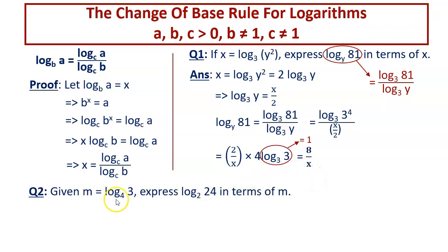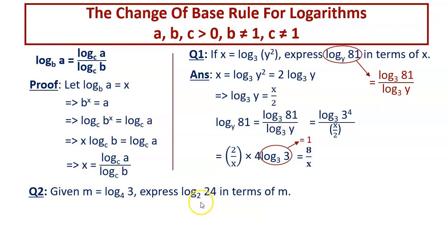Coming to the next question: given M equal to log of 3 to the base 4, express log of 24 to the base 2 in terms of M. We see this is base 4 and this is base 2, and we have to change the base — we have to get to the same base. We can change base 2 to base 4 or change base 4 to base 2. Remember, it is always easier to change from the higher base to the lower base.